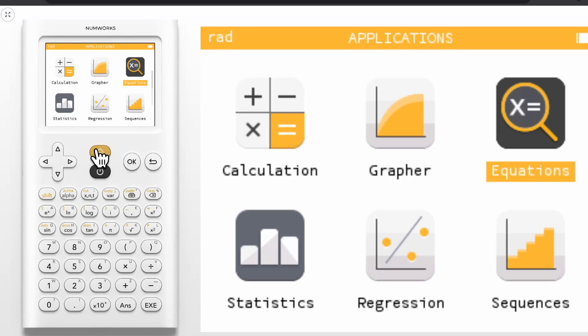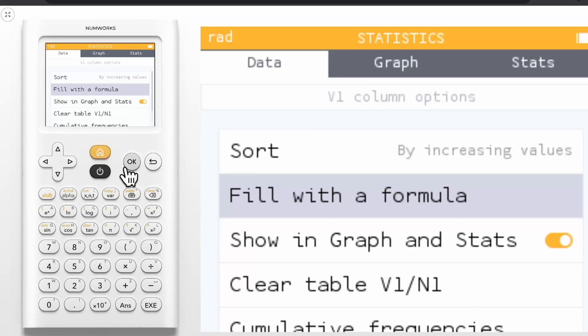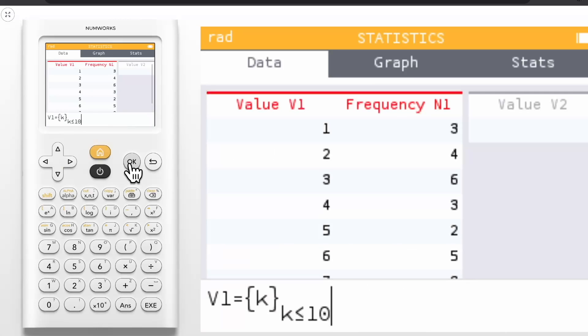The next update we will look at is related to the statistics app. For this example, I'll use a saved simulator session that already has data entered. Note that I've already added data in the V1 list and frequency column. While you've been able to fill lists with a formula, in version 21 we've added the ability to reevaluate or edit the formula you used. For example, the V1 list was generated with the fill with formula integers 1 to 10. To edit this formula, navigate to the top of the list and press OK, then fill with formula and press OK. Notice the formula that I used to create this list pops up at the bottom in an editable field so it can be adjusted as needed. Let's change the formula to k minus 1 and change the upper limit to 11. This will change the V1 list to 0 through 10.